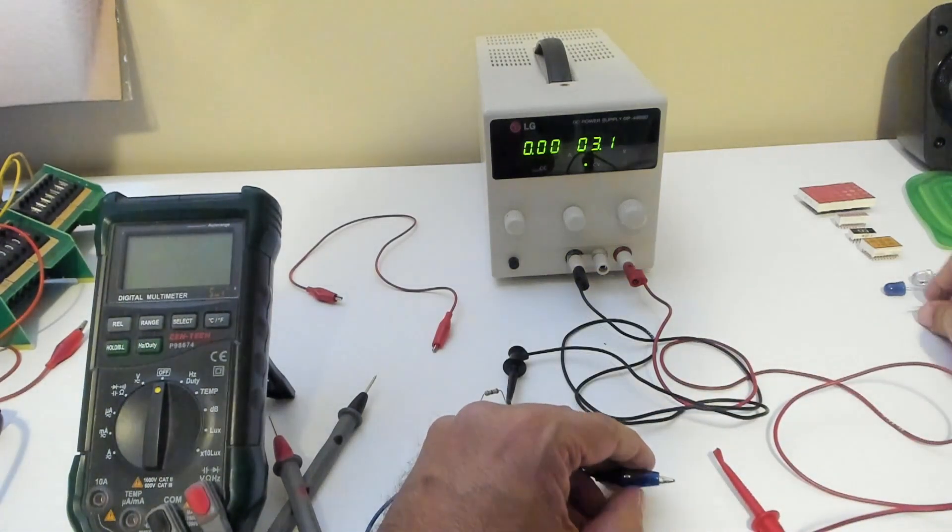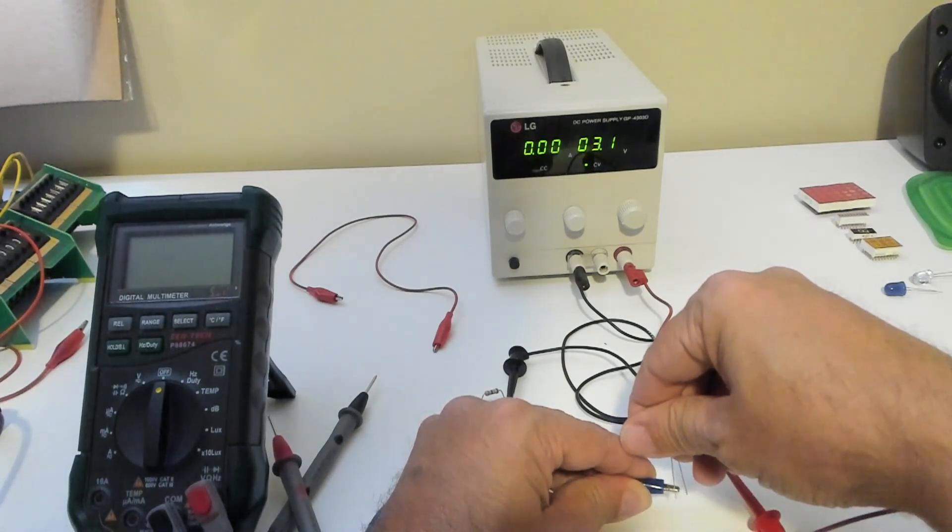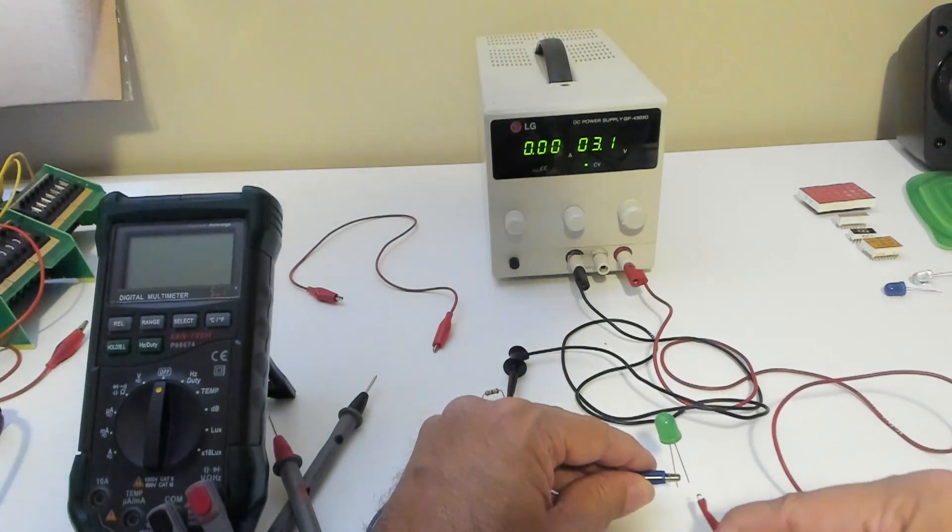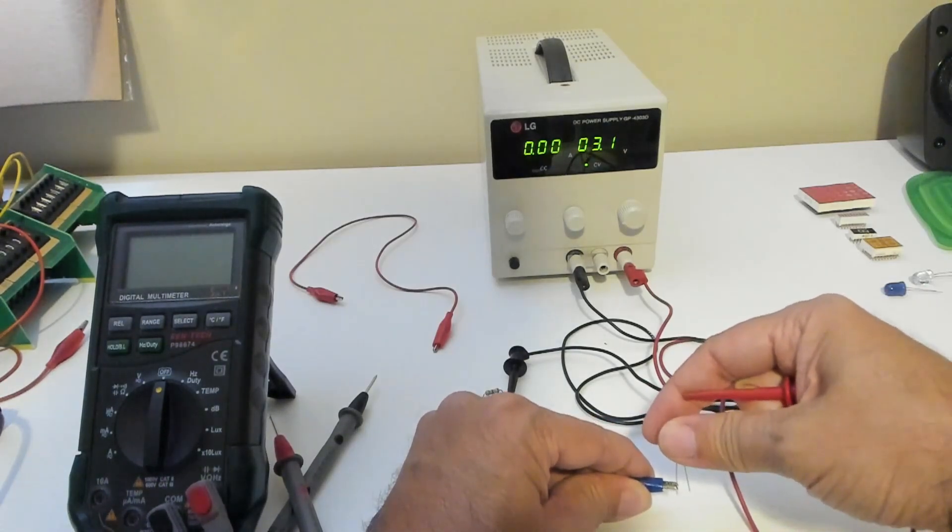Now on another LED, we'll connect the long wire which is the anode to the negative and the short wire cathode to the positive. Again, the light doesn't turn on.